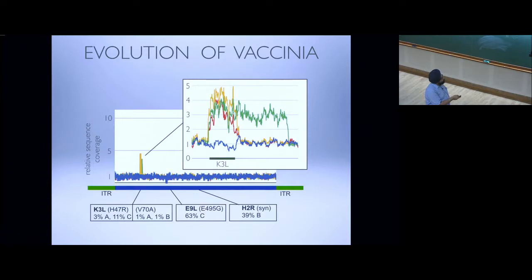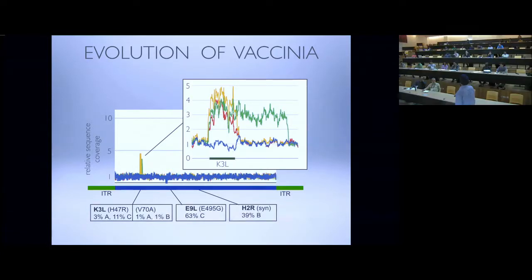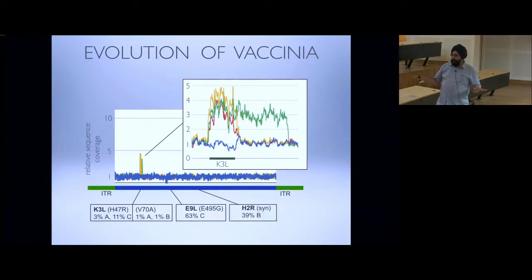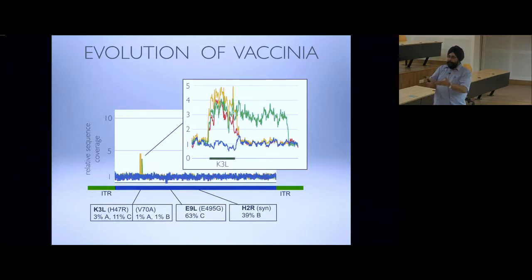Looking more closely at just the K3L locus: we have a reference genome and all these short reads piled up where they map. Over the K3L locus, we have four to five times more reads mapping than at an average site in the pox viral genome. This is simply saying that in each adapted strain — but not in the parental strain — the K3L locus has undergone some sort of genomic expansion.